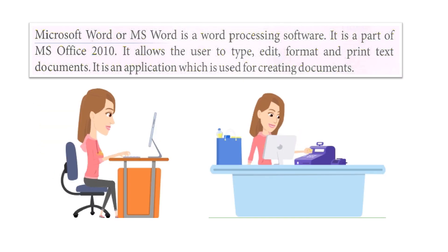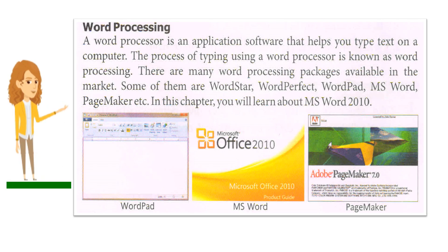Microsoft Word, or MS Word, is a word processing software. It is a part of MS Office 2010. It allows the user to type, edit, format and print text documents. It is an application used for creating documents. A word processor is an application software that helps you type text on a computer. The process of typing using a word processor is known as word processing.